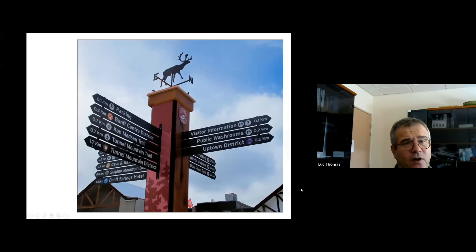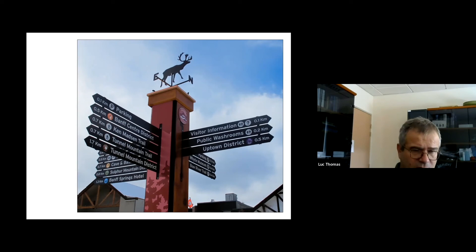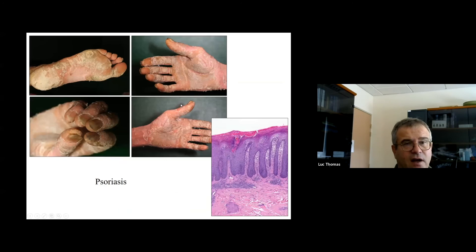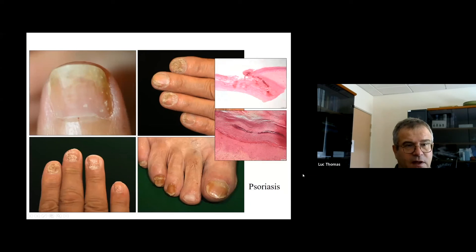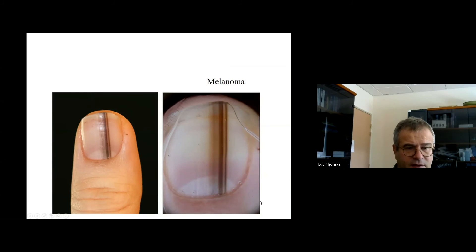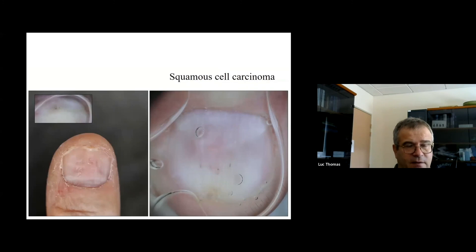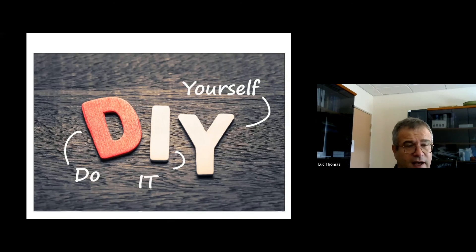This is why we will review all the indications of biopsy on acral sites — palms and soles, and nails. We will see how to get a good biopsy to identify inflammatory diseases on the nails and on palms and soles. We will see what is the best method to clearly histopathologically identify malignant tumors of the nail unit, like melanoma and squamous cell carcinoma. Of course, you will know how to do it yourself and not refer all these patients to highly trained specialists.